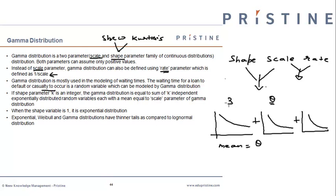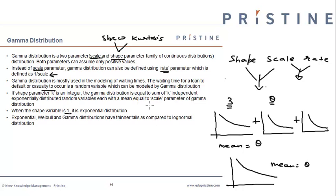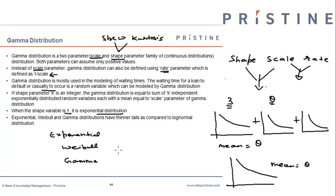Therefore, if the shape parameter is 1, then the gamma distribution will be nothing but equal to the exponential distribution. Also, gamma distribution is classified as a thin-tail distribution. Exponential, Weibull, and gamma have a thinner tail as compared to log-normal distribution.